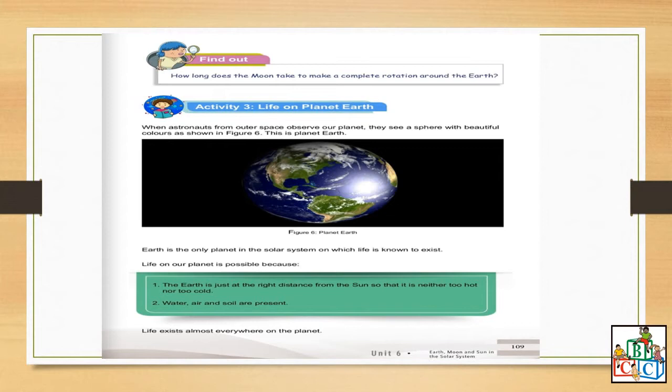Earth is the only planet in the solar system on which life is known to exist. And why is this possible? Because the Earth is just at the right distance from the sun so that it is neither too hot nor too cold, as well as water, air and soil are present on planet Earth. Life exists almost everywhere on the planet. Life which means living things, animals, plants, human beings, almost everywhere we do exist.